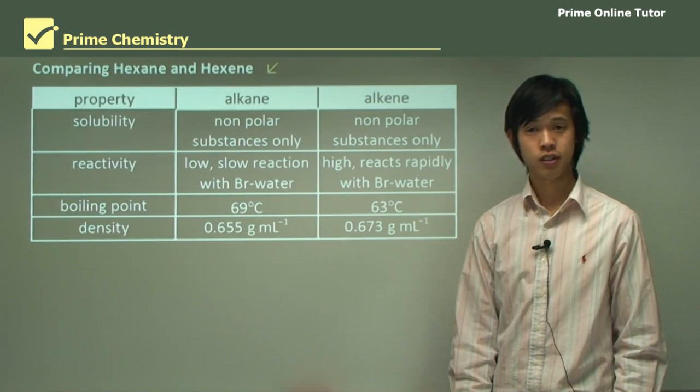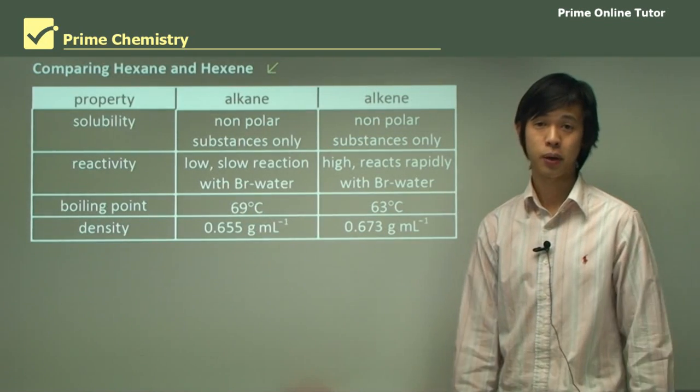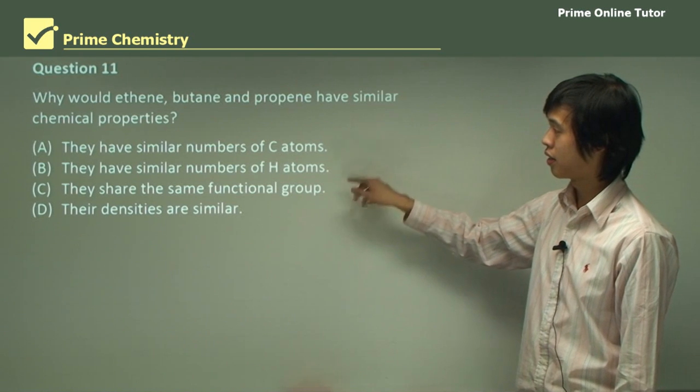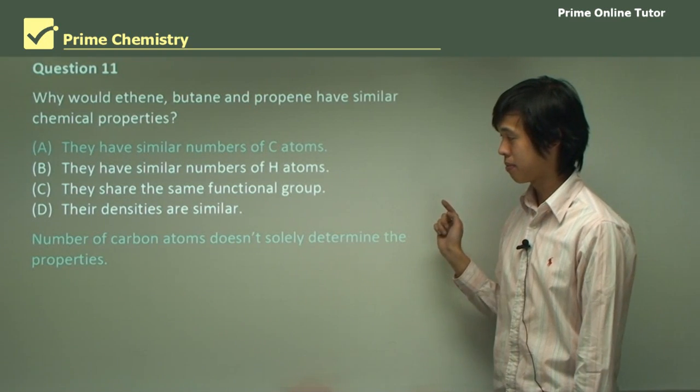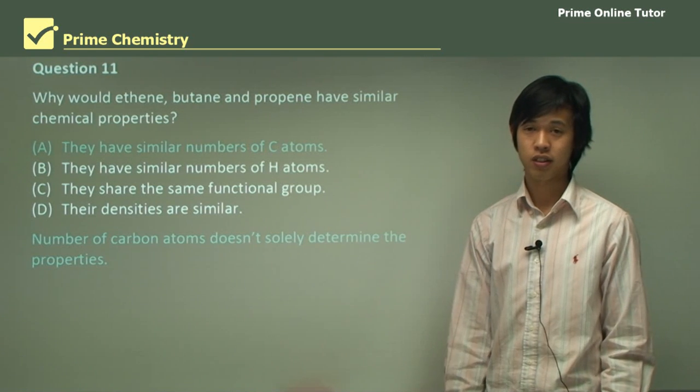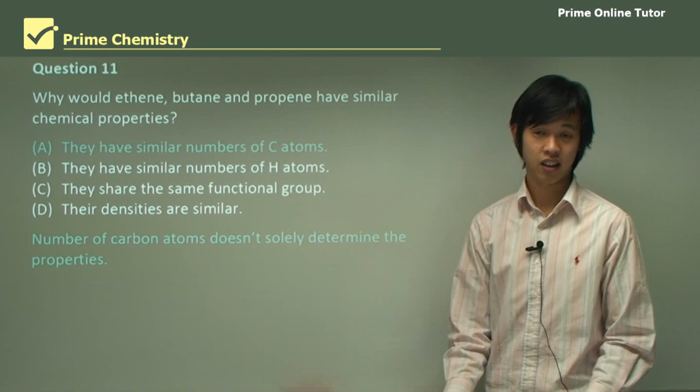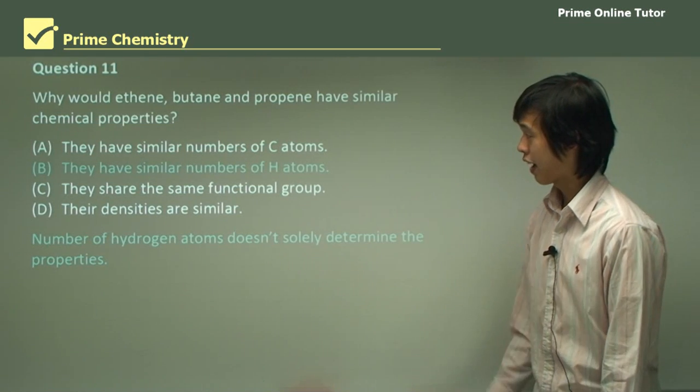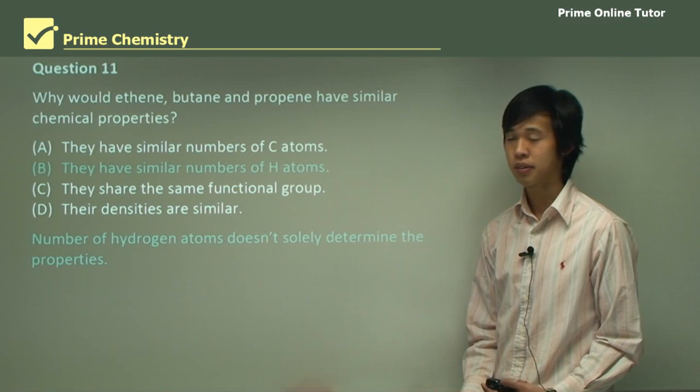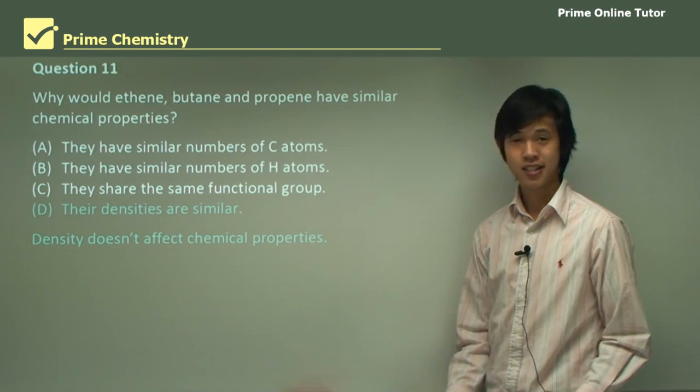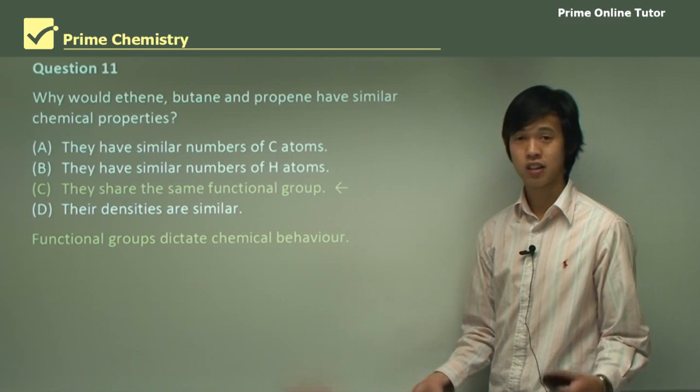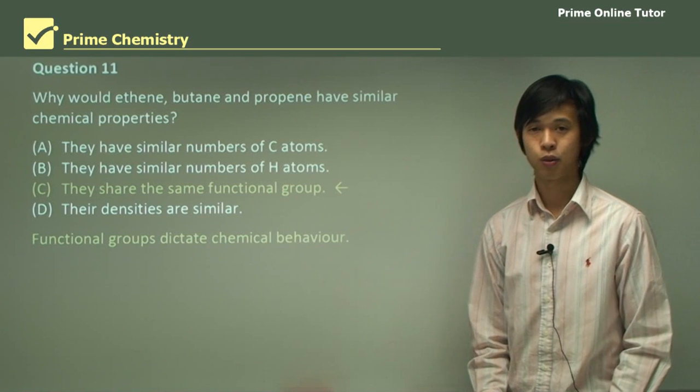Question 11: Why would ethene, butane and propene have similar chemical properties? They have similar numbers of carbon atoms - no, because the number of carbon atoms doesn't solely determine the properties. Similar numbers of hydrogen atoms - no, that doesn't solely determine properties either. Densities are similar - no, density is a physical property. They share the same functional group, which is true. They share the double bond functional group. Functional groups generally dictate the chemical behaviour, so that's why they're all similar.